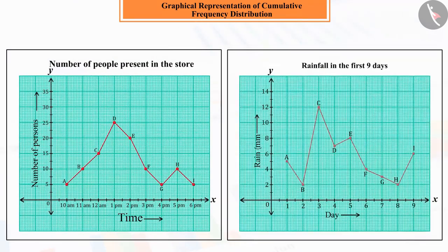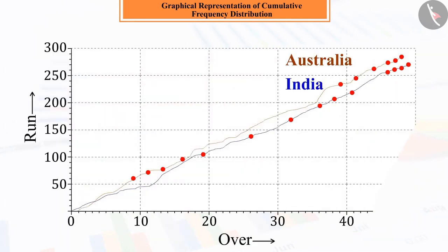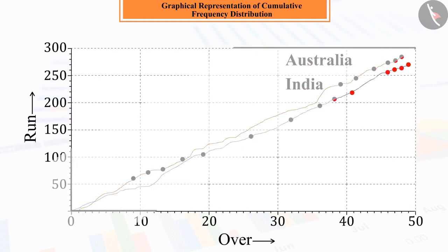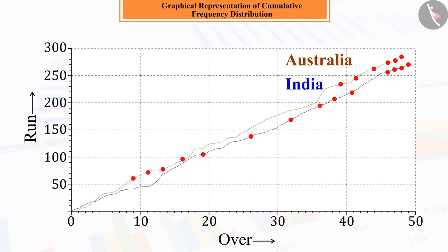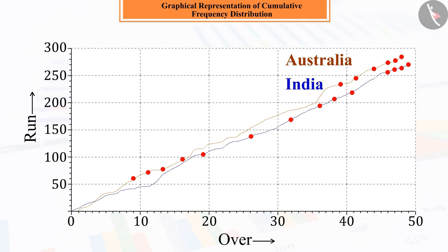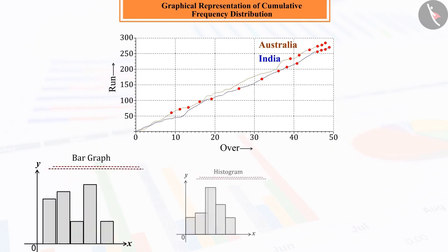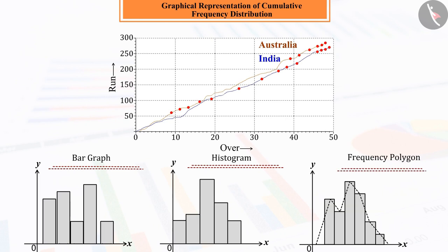We know that we learn concepts better and more quickly through pictures than through words. For example, while watching a cricket match on television, many times we see this type of graph, and by looking at the graph, we understand in which over and with what score the player has got out. Using this concept, we have learnt to draw graphs from the frequency distribution table in the previous class.